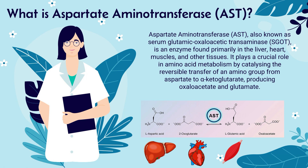So what is aspartate aminotransferase or AST? Aspartate aminotransferase, also known as serum glutamic oxaloacetic transaminase, is an enzyme found primarily in the liver, the heart, the muscles and other tissues. It plays a crucial role in amino acid metabolism by catalyzing the reversible transfer of an amino acid group from aspartate to alpha-ketoglutarate, producing oxaloacetate and glutamate.